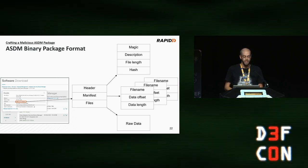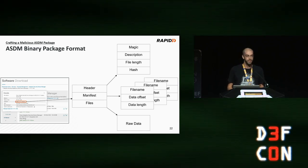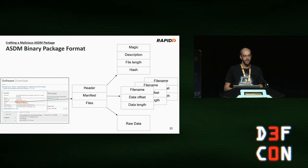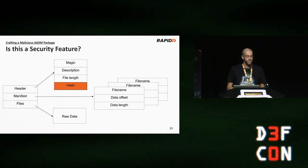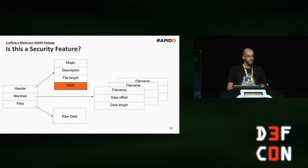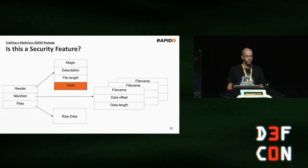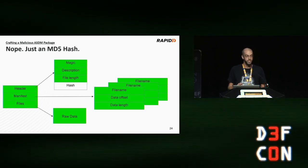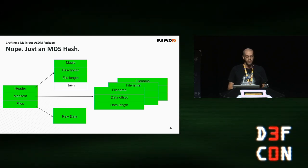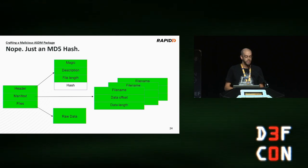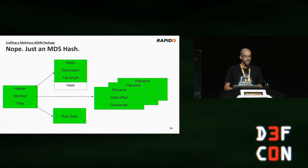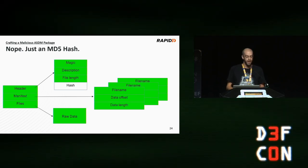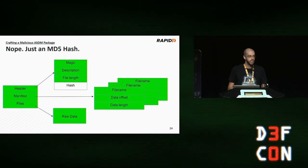I went hunting for the SGZ file in the ASDM binary package. It's a non-standard format but turned out to be pretty simple: the package breaks down into three parts — a general header, a manifest area, and all the files concatenated together at the end. I was also looking for security features, specifically evidence that Cisco was signing the package. I found a hash field in the header, but it turned out to be just a checksum — not a Cisco signature. Because there's no Cisco signature on this binary package, anyone can craft their own arbitrary ASDM package, which means we can upload arbitrary SGZ files to the ASA and attack the administrator on CorpNet.